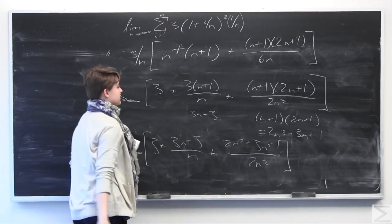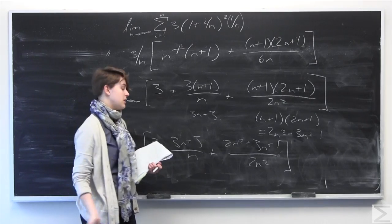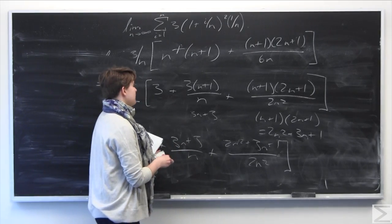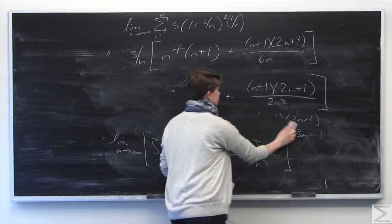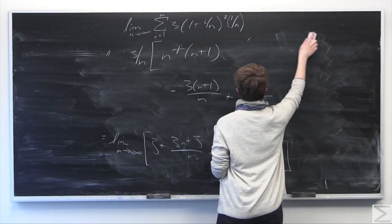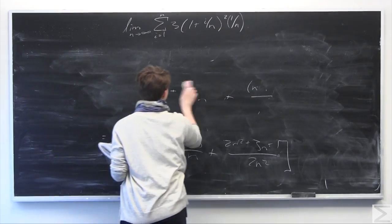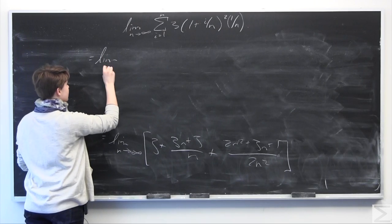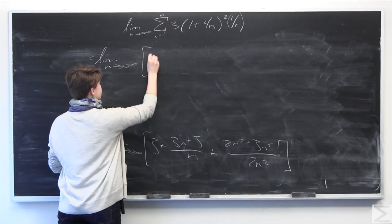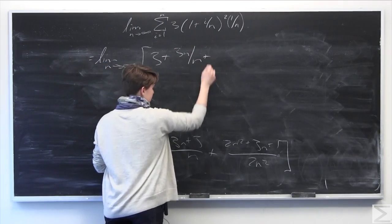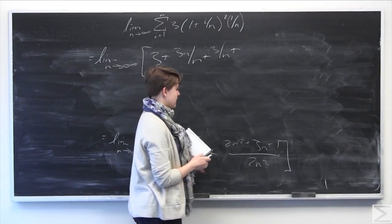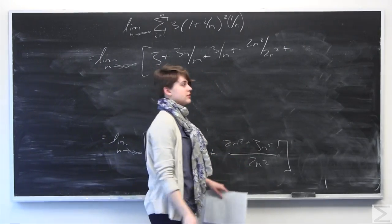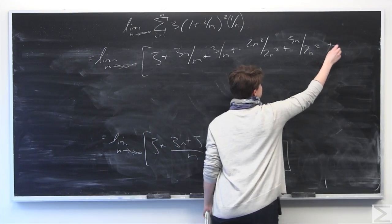When we have a fraction with multiple terms in the numerator over a single term in the denominator, we can break it into separate fractions. So (3n plus 3) over n becomes 3n over n plus 3 over n. Similarly, (2n squared plus 3n plus 1) over 2n squared breaks into 2n squared over 2n squared, plus 3n over 2n squared, plus 1 over 2n squared.